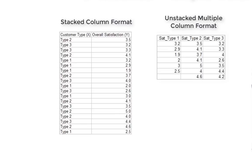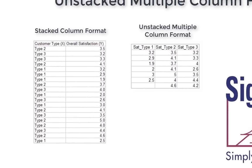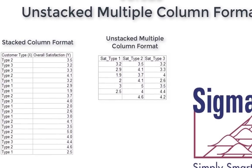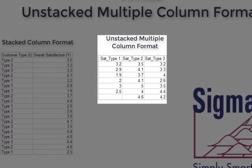If the data is in unstacked multiple column format, each unique group of X corresponds to a different column. Here's an example of the same data shown in unstacked multiple column format.